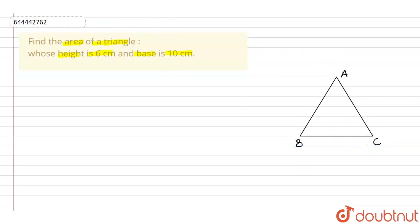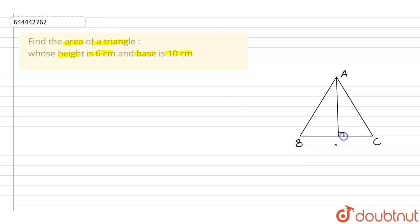Let us also draw the altitude of this particular triangle — that is, the height from A to side BC. This is the height of the triangle, and this angle is 90 degrees. The height is given as 6 centimeters.